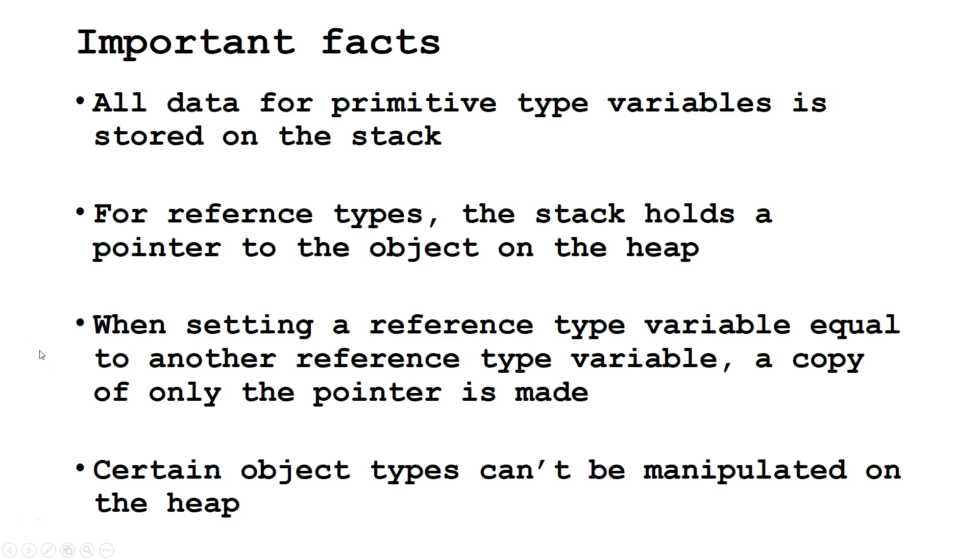Third, when setting a reference type variable equal to another reference type variable, a copy of only the pointer is made. And fourth, certain object types can't be manipulated on the heap. These are called immutable objects.